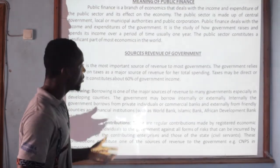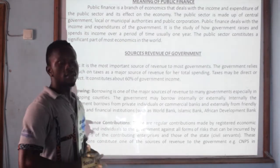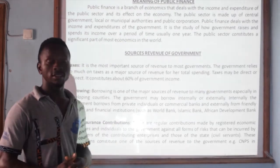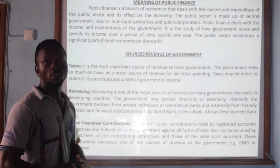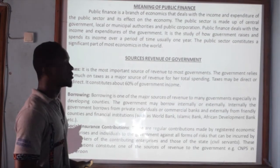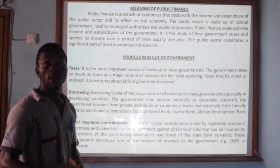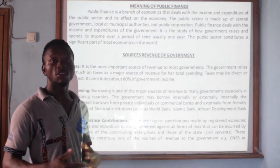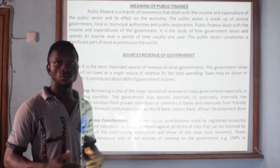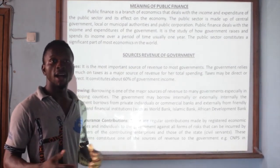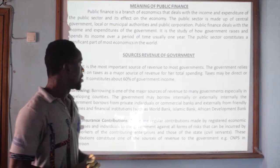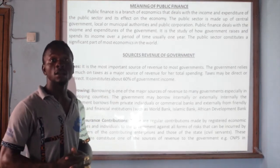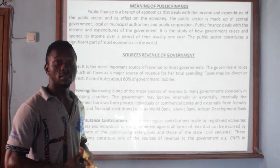Now our first discussion looks at the sources of government revenue. Number one, we are going to be talking about tax. Tax is a compulsory payment made by individuals to the government. The government raises about 60% of its income from taxes.